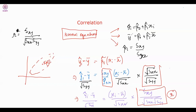This is what we call the correlation coefficient — it arises naturally. We can rewrite the equation as: standardized ŷᵢ (call it SYᵢ) equals r times standardized xᵢ (SXᵢ). This gives us an idea of how much y changes relative to its standard deviation when x changes relative to the standard deviation of x.